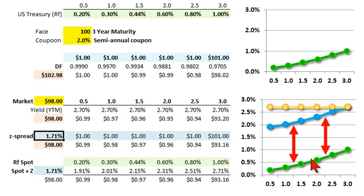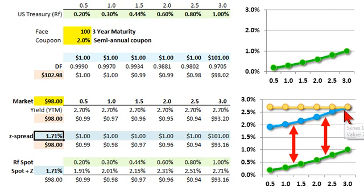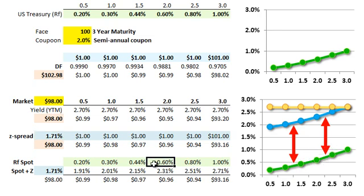The Z-Spread is 1.71% — the spread added to all points across the entire spot rate curve that produces a discounted price equal to the market price. You can see how it's an improvement: the nominal credit spread was simply a difference in single-point, implicitly flat yields, whereas the Z-Spread gives the compensation an investor receives over the entire spot rate curve. This is David Harper of Bionic Turtle — thanks for your time.